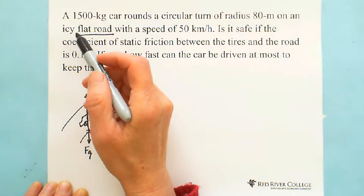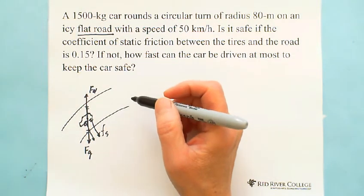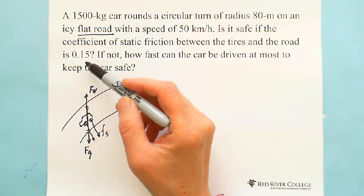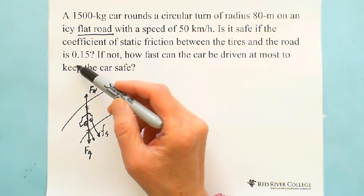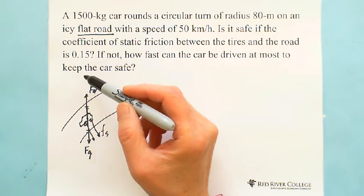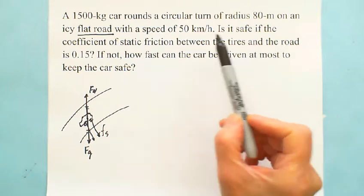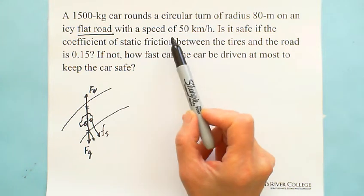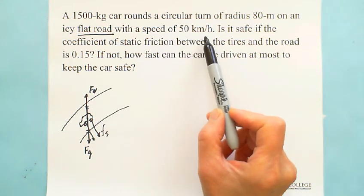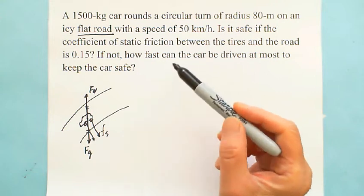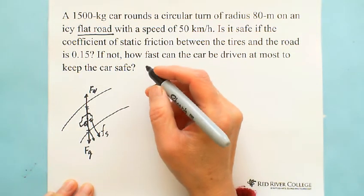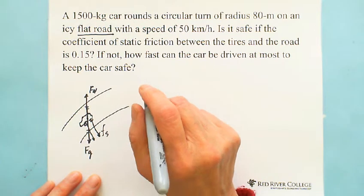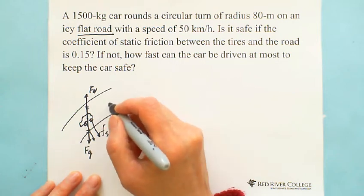But on the icy road, the coefficient of static friction is really small, 0.15, sometimes even smaller. So in this situation, we need to limit the car speed. That's why they ask, in this situation, if the coefficient is 0.15 and the car is driven at 50 km per hour, first we have to calculate the maximum static friction that can support the car doing circular motion.